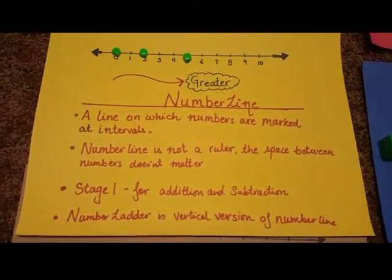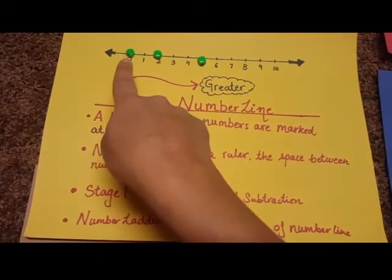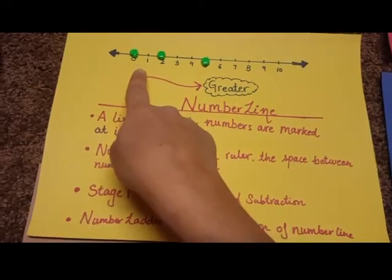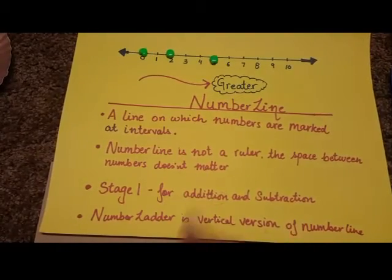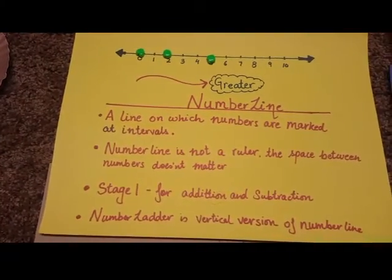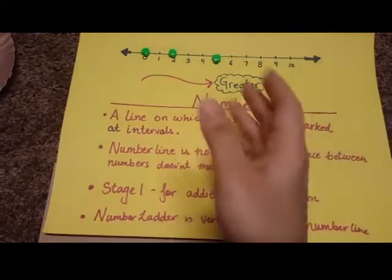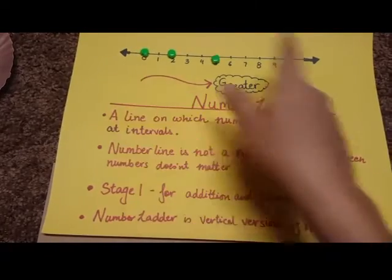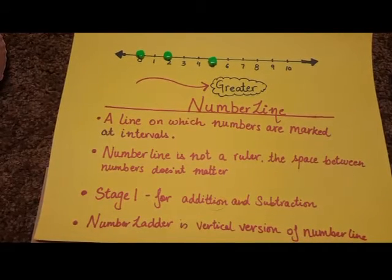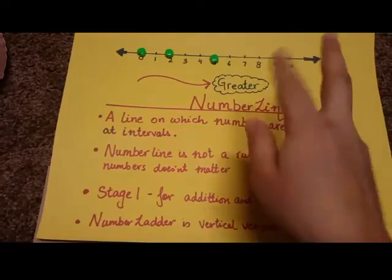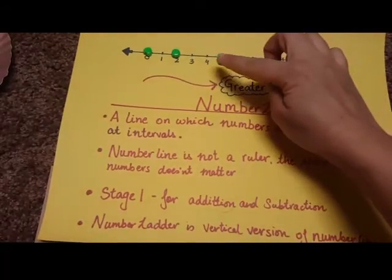As you can see, there is one fact card here which says number line and I've made a number line here and the arrow which is showing here is like this is greater because anything which is on the right hand side is greater in number line. I am just going to focus on the greater right now and not on the left hand side which is like minus. I am going to tell Vivan that the number line starts from 0 and you can go up to whichever number you want but to begin with we will do from 0 to 10.